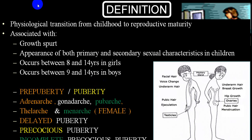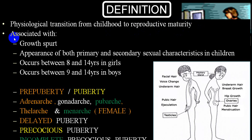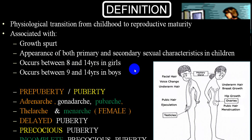Puberty is a physiological transition which takes place from childhood to reproductive maturity. Once puberty starts, that particular person is able to achieve reproductive maturity. It is associated with a growth spurt and appearance of both primary and secondary sexual characters. Usually in females, it is between 8 to 14 years. If it occurs before 8, it is called precocious puberty. If it occurs after 14 years of age, we call it delayed puberty.